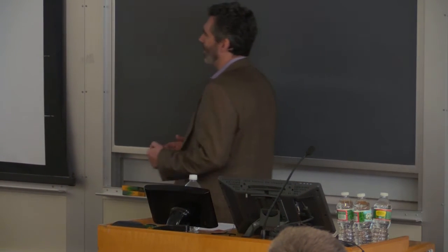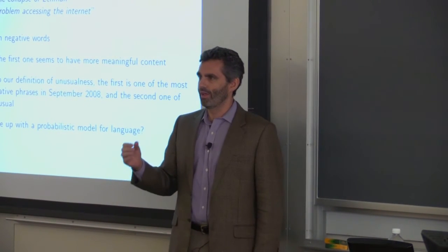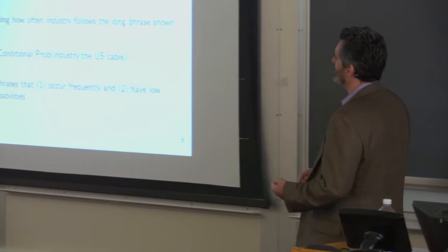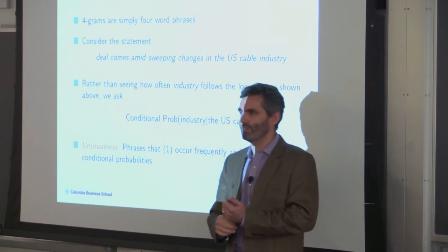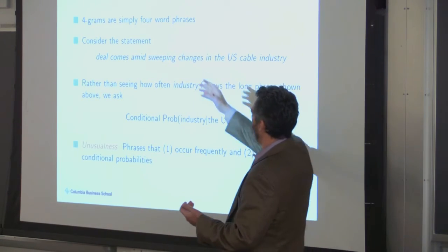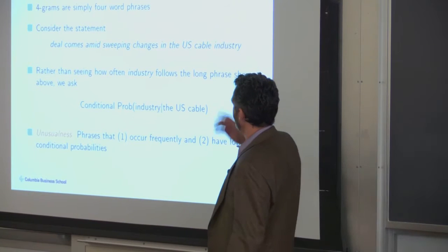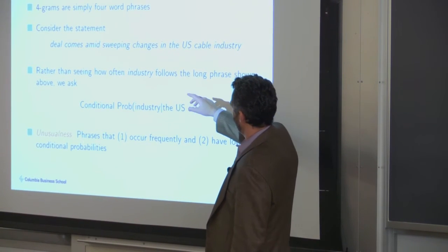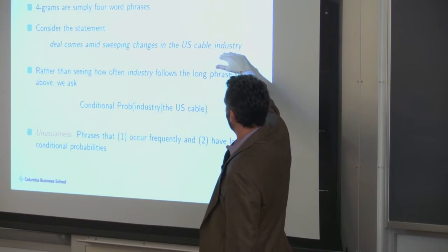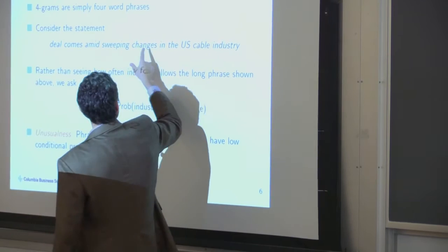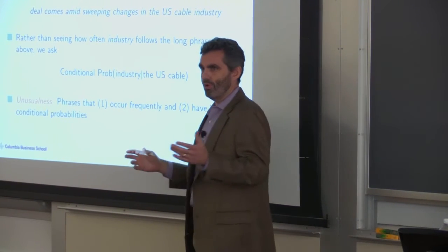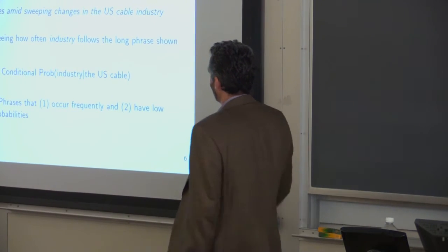According to our measure of unusualness, the first phrase — collapse of Lehman — turns out to be one of the most unusual phrases in that month, and the second one of the least unusual. To say something is unusual you need a probabilistic model for language — a model that says: is the language you're seeing likely or unlikely given the history of language you've seen before? There's a concept in linguistics and computer science called n-grams — the way of saying word phrases of length n. So a four-gram is a phrase of four words. We work with four-grams.